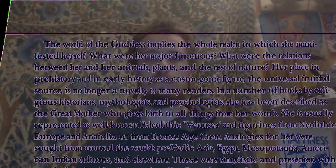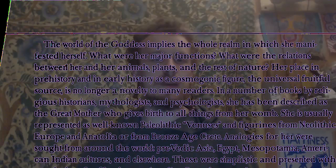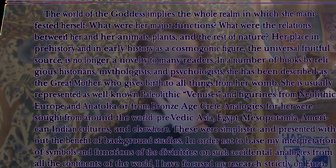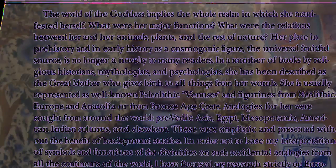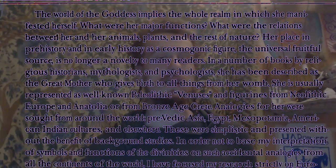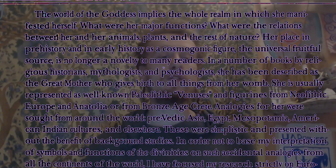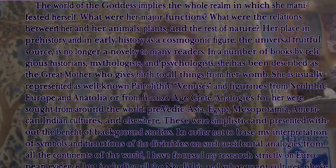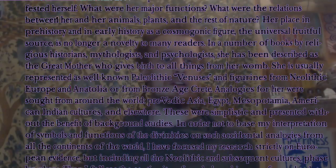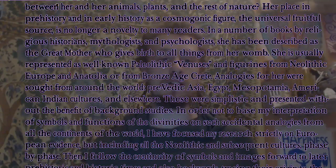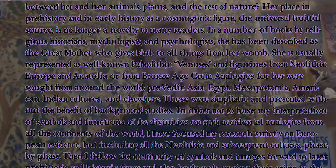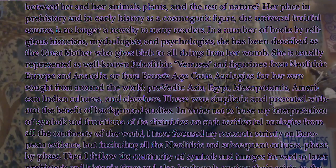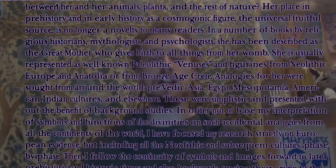The world of the goddess implies the whole realm in which she has manifested herself. What were her major functions? What were the relations between her and her animals, plants, and the rest of nature? Her place in prehistory and in early history as a cosmogenic figure, the universal fruitful source, is no longer a novelty to many readers. In a number of books by religious historians, mythologists, and psychologists, she has been described as a great mother who gives birth to all things from her womb. She is usually represented as the well-known Paleolithic Venuses and figurines from Neolithic Europe and Anatolia, or from the Bronze Age Crete.